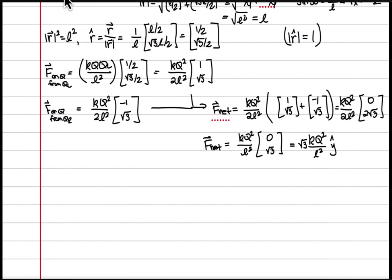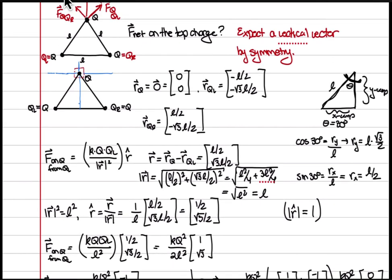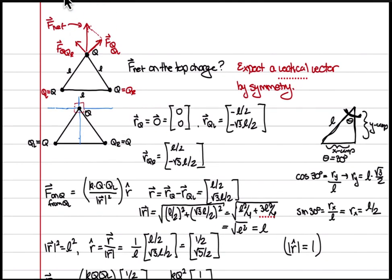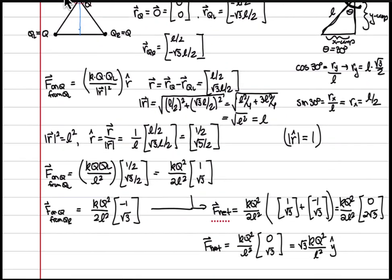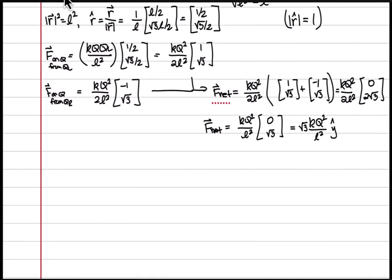For the other two charges, symmetry tells us the direction the net force vector should point. F_net for the lower left should point away from the triangle in its corresponding direction, and similarly for the lower right. Those will have horizontal and vertical components based on the coordinate system, but by the symmetry of the problem we can already anticipate the direction each should point.